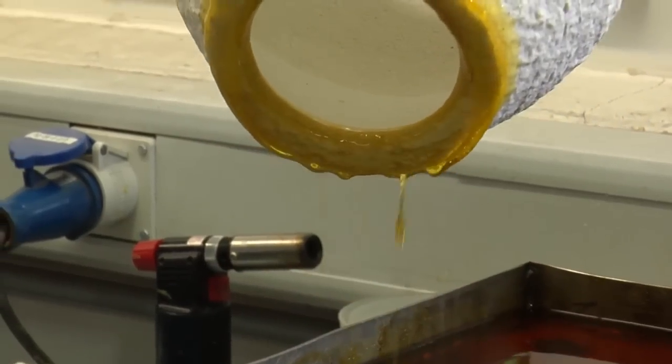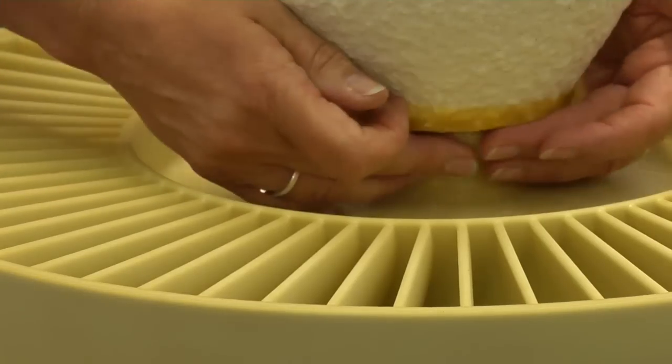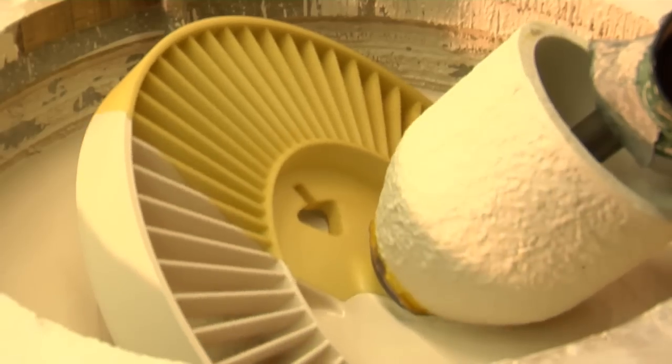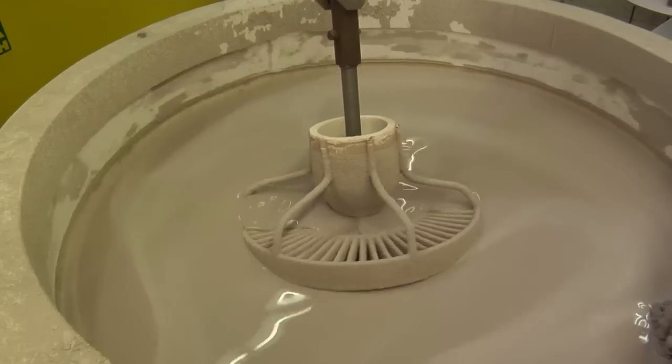The gating and feed system is mounted after inspection. The finishing process is the same as for conventional wax models. The first ceramic coatings are applied manually, while subsequent layers are added by robot.